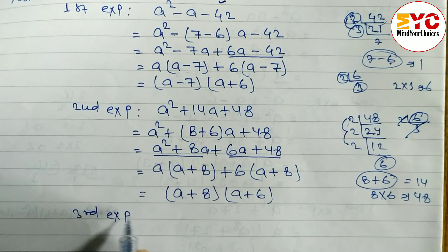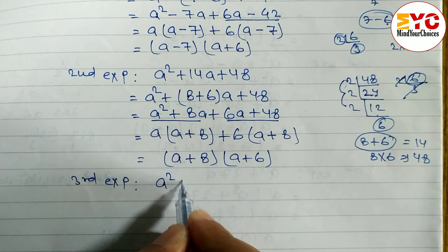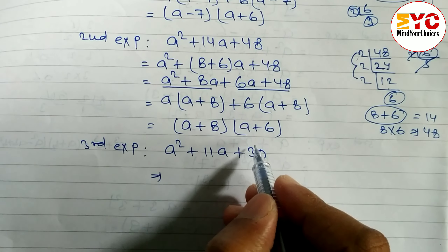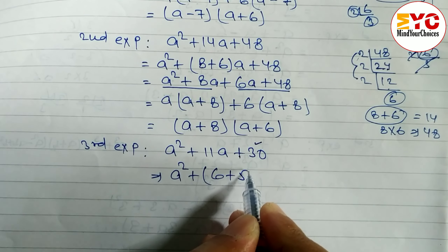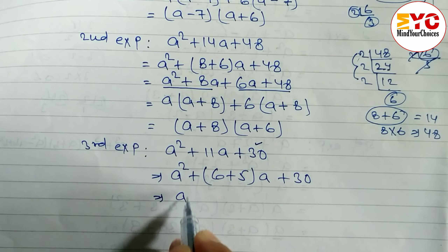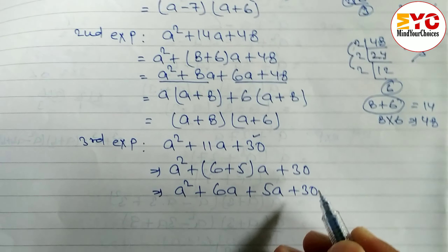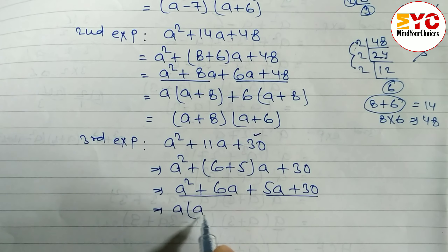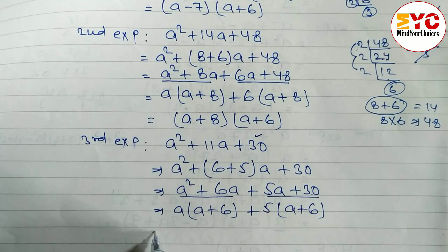For the third expression: a squared plus 11a plus 30. The factors that multiply to give 30 and add to give 11 are 6 and 5, since 6 times 5 is 30 and 6 plus 5 is 11. So we write: a squared plus 6a plus 5a plus 30. Taking common: a(a plus 6) plus 5(a plus 6), which gives (a plus 6)(a plus 5).